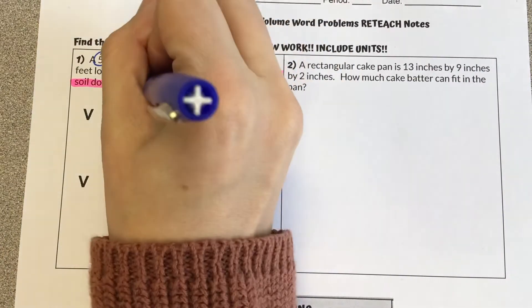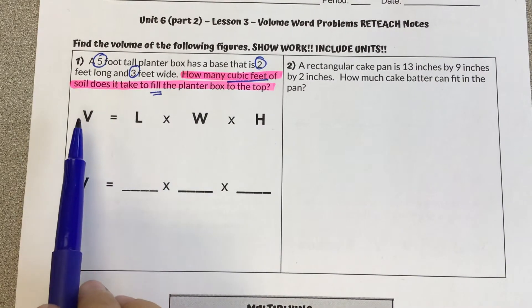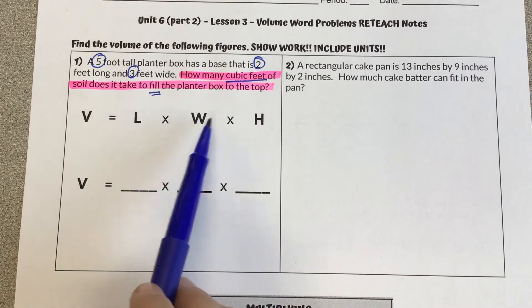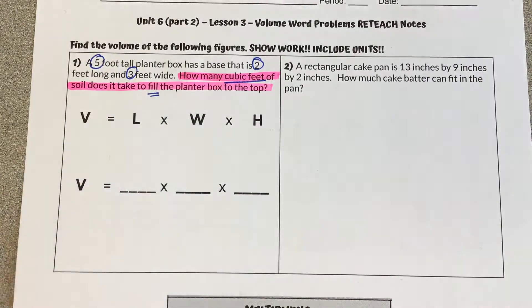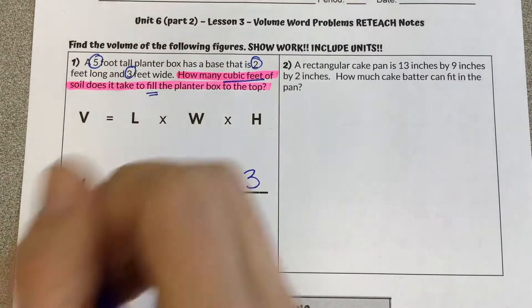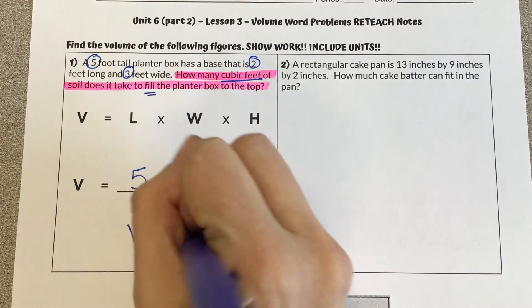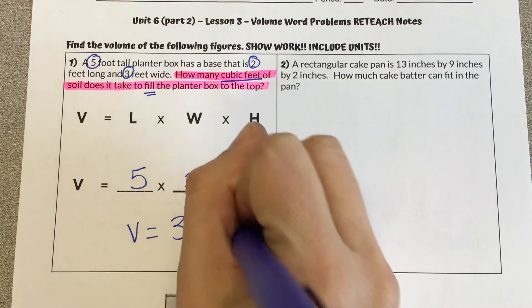But then also we're saying, how much is it going to take to fill the planter box? So that's the inside of the space, which is our volume. Volume takes up the inside of the space. So remembering, our volume formula is length times width times height. So I'm going to plug in these three values. Five times two times three.